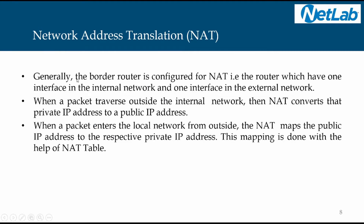Generally, the border router is configured for NAT. A router, a Windows machine, or any device such as a modem can perform network address translation. The device at your perimeter handles NAT. The NAT device must have two interfaces — one belonging to the internal network and one to the external. When a packet traverses outside the internal network, NAT converts the private IP address to the public IP address at the border router.